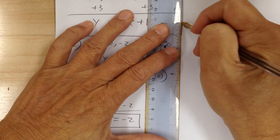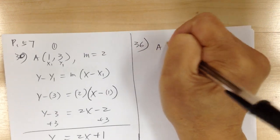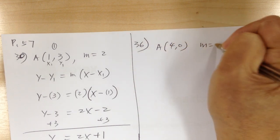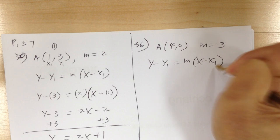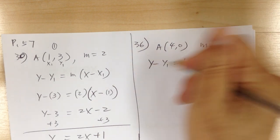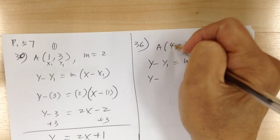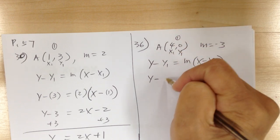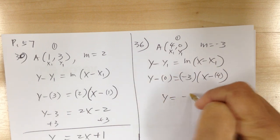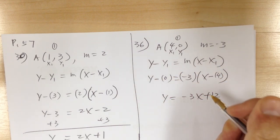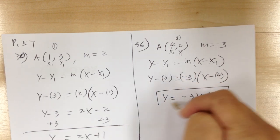Moving the number to the other side gives y equals negative 2, and that's the equation. Number 36: point (4, 0) and m equals negative 3. Using point-slope form: y minus 0 equals negative 3 times (x minus 4). Distributing gives y equals negative 3x plus 12, which is the slope-intercept form.